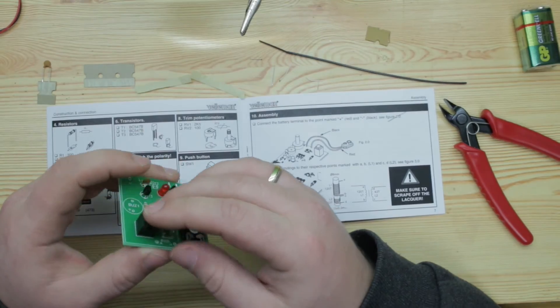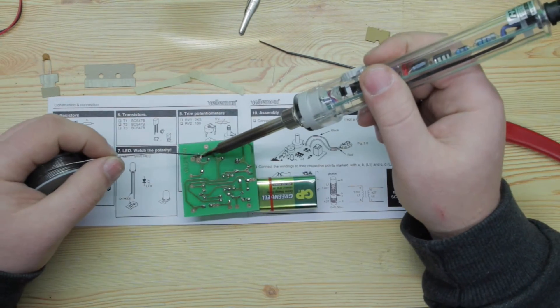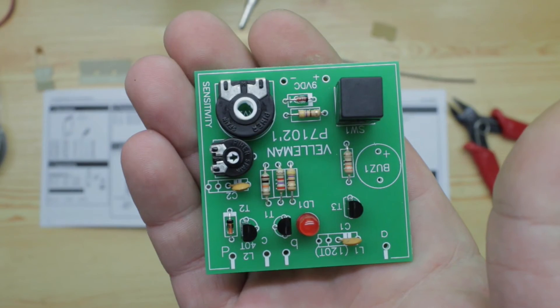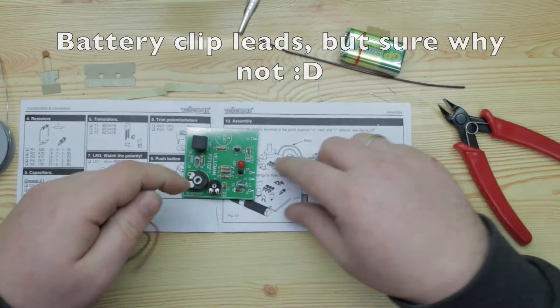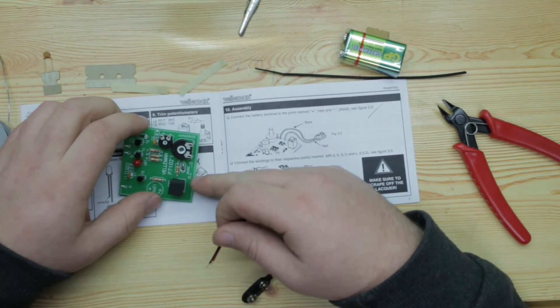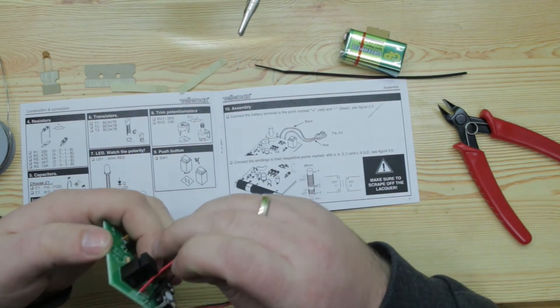Next one is the button. It goes in only one way. Take our terminal leads. On the bottom of the PCB we have 9V DC, plus and minus. Red is always positive and black is negative.